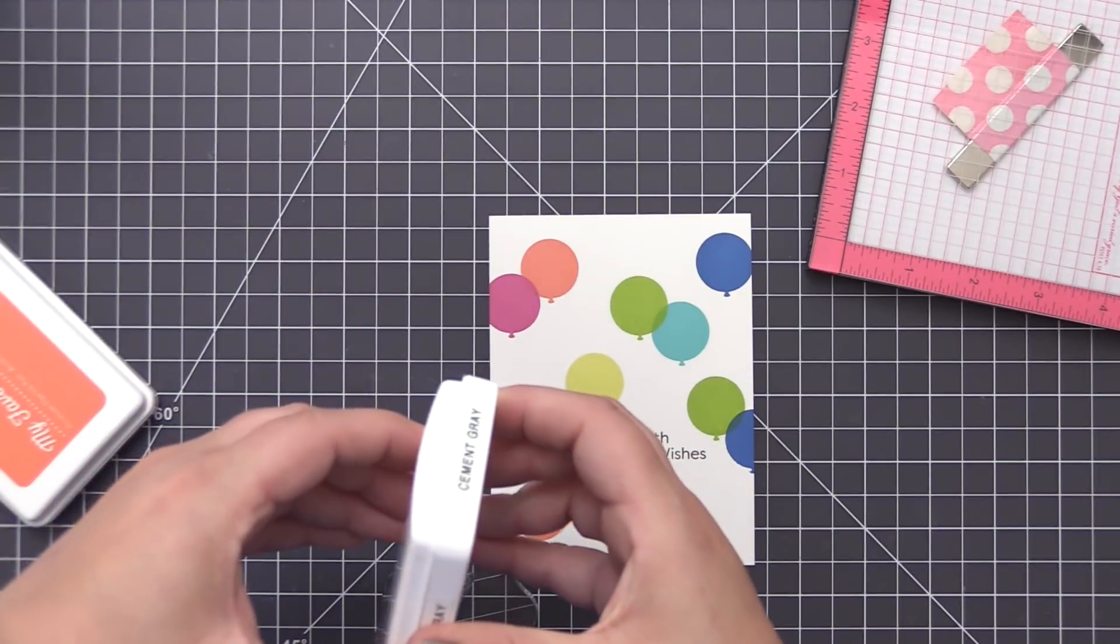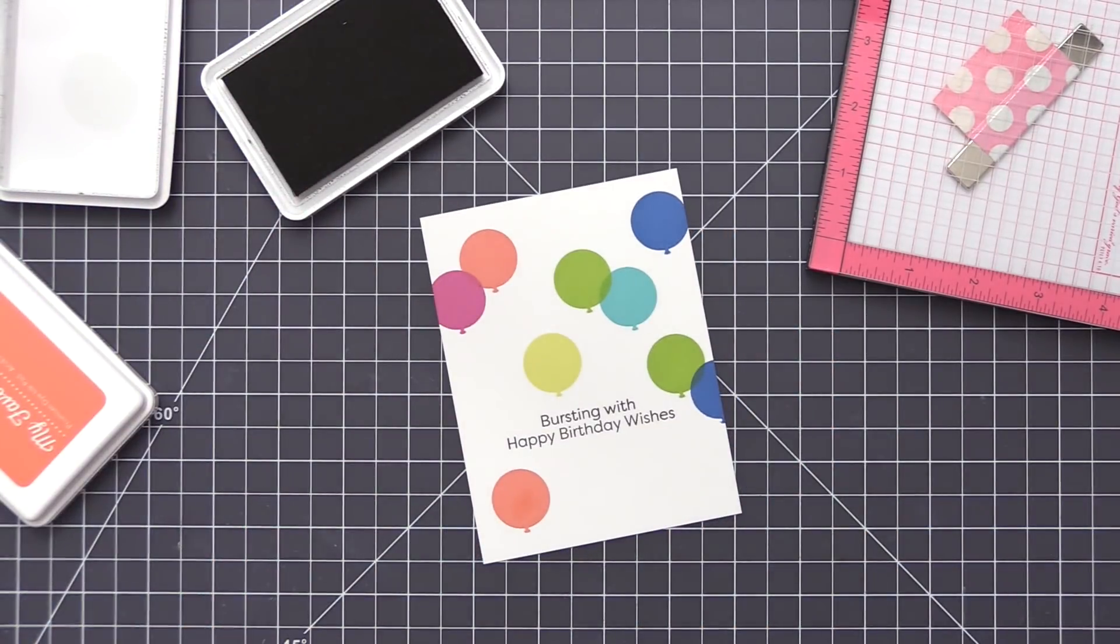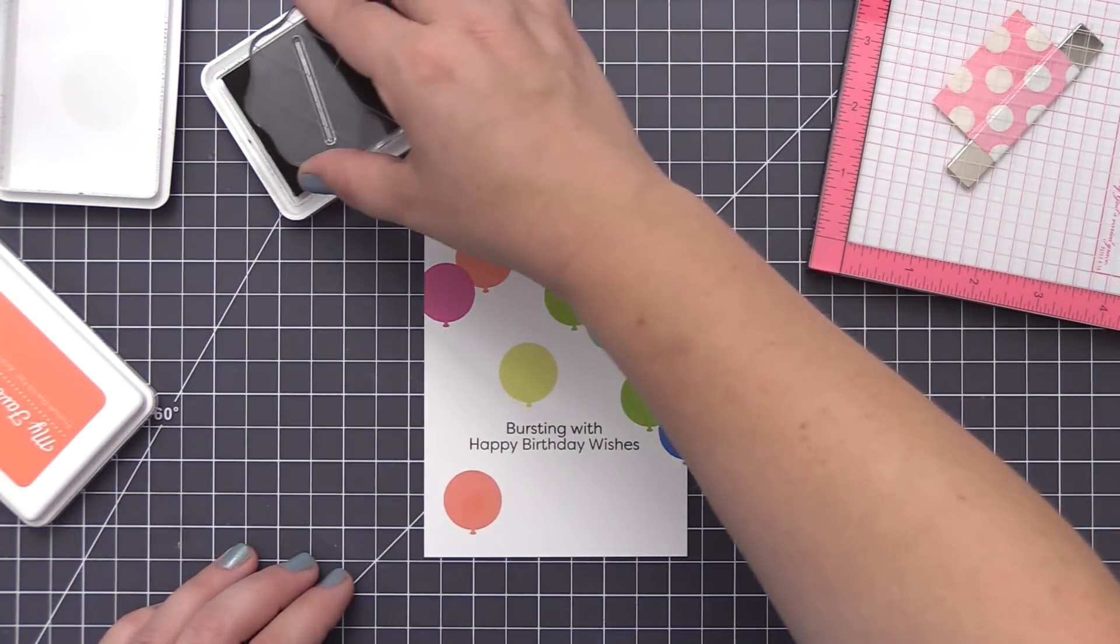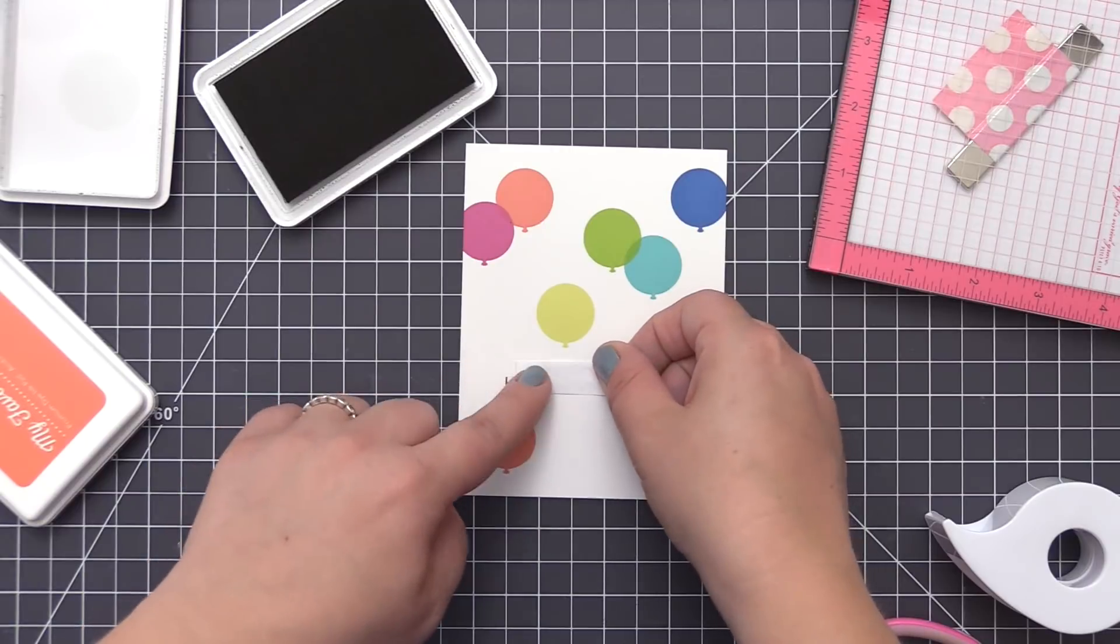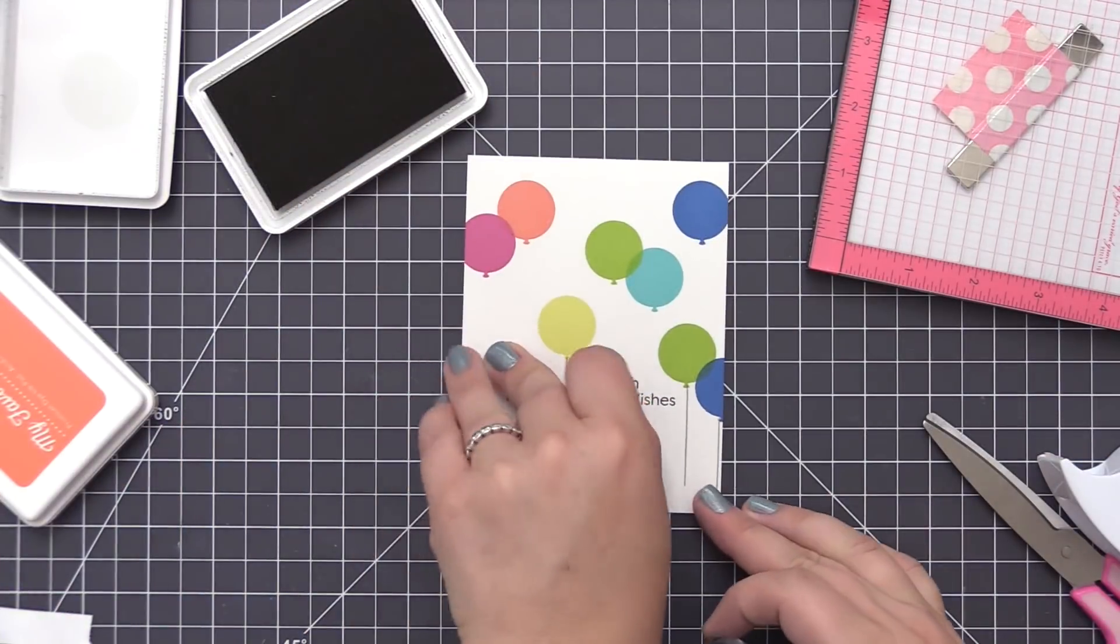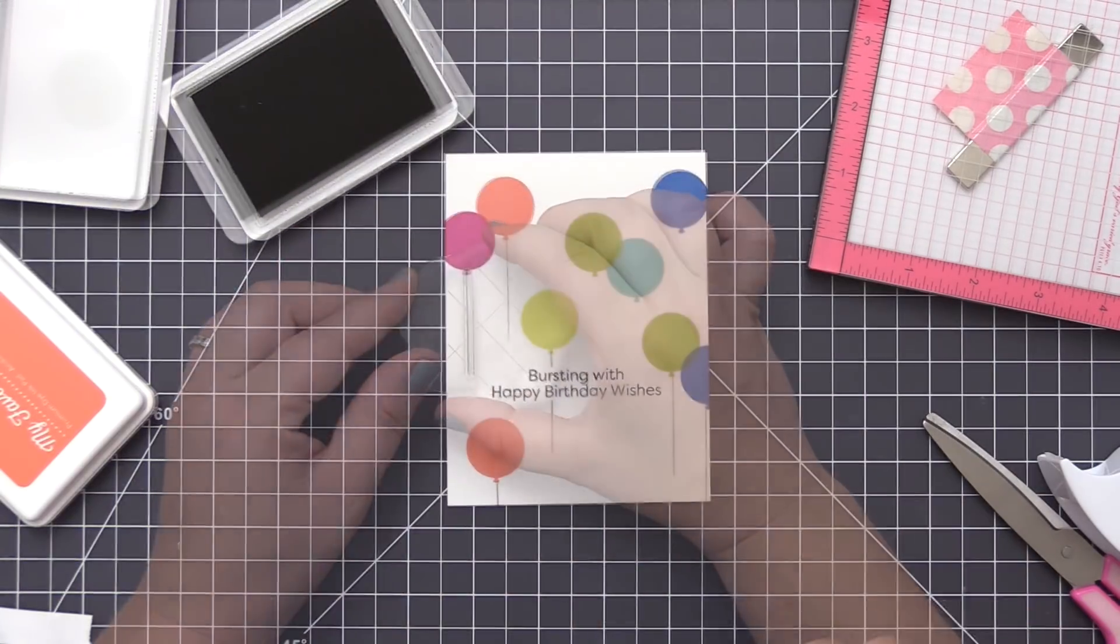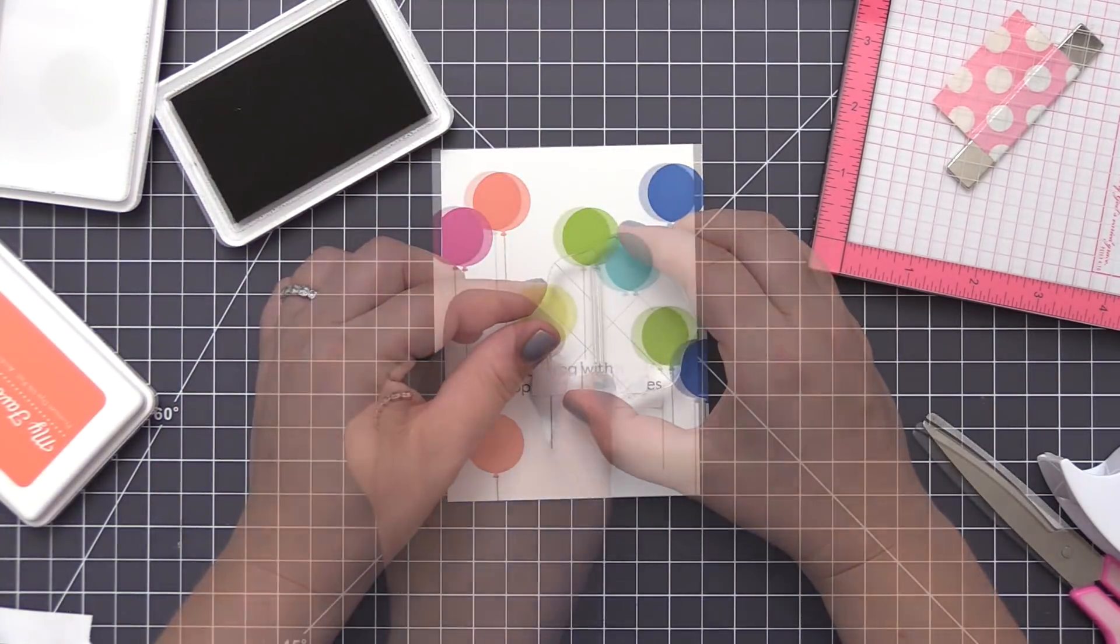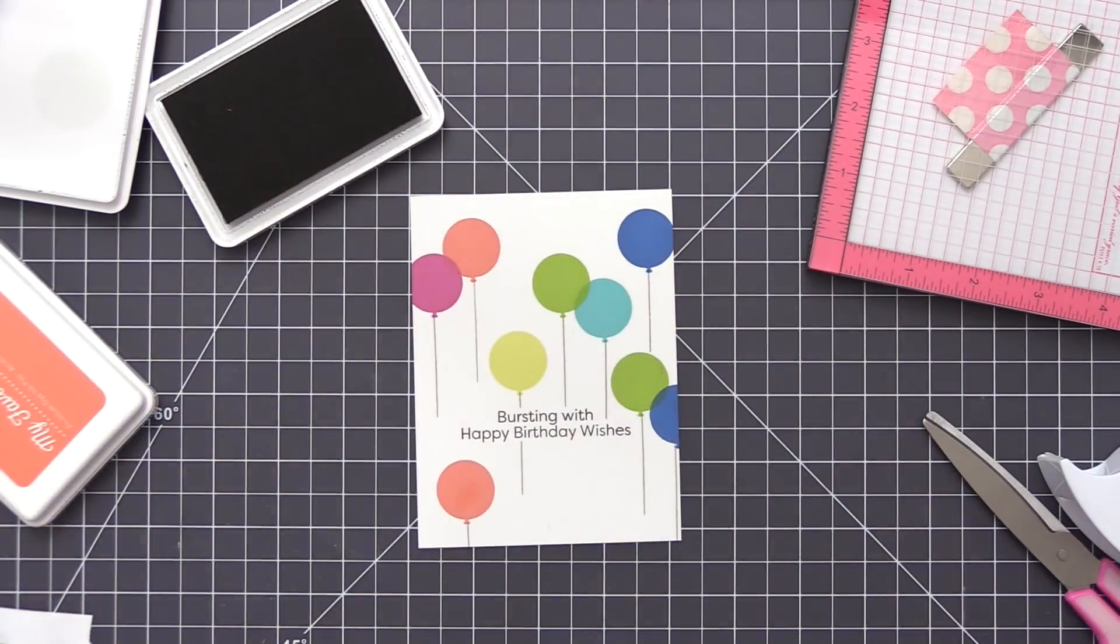For the balloon strings, I decided to go with the gray ink rather than black just so that they didn't stand out too much on the card. I wanted the focus to stay on the colorful area of the balloons, so I'm going to use cement gray ink and do my stamping of all of these balloon strings. I'm just kind of hopping around here adding the string to each of the balloons, and I have a piece of masking tape that I'm just kind of adding over the sentiment anytime one of those balloons is going to go down far enough to actually stamp on top of it.